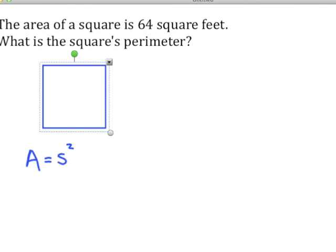If we know that the area was 64, we can find one side length by solving that equation. We'll undo that square with a square root and we get that one side length is equal to 8.